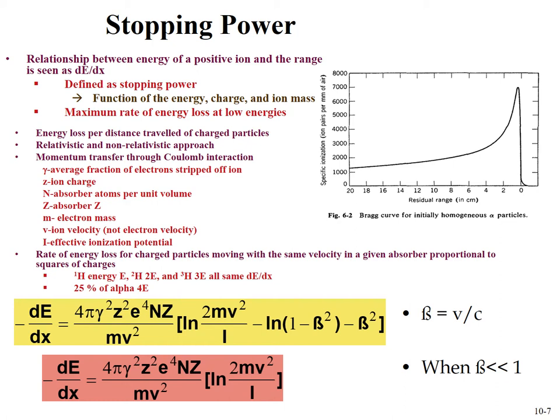The rates of energy loss for charged particles moving with the same velocity in a given absorber is proportional to the square of their charges. So for a proton at a given energy, deuterium would need twice that energy and tritium three times that energy to have the same energy loss as a function of distance. An alpha particle at four times the energy would have 25% of its energy loss due to mass differences.